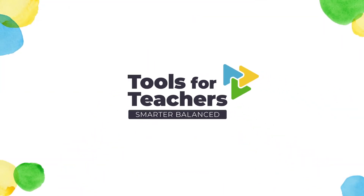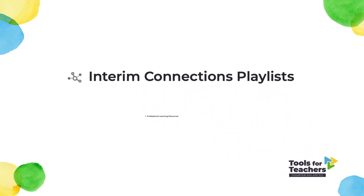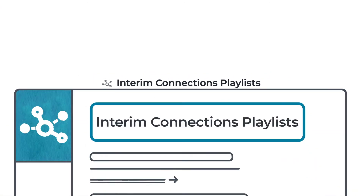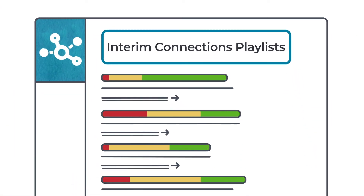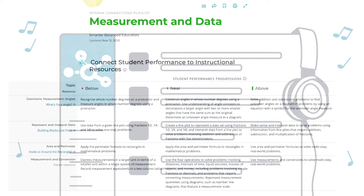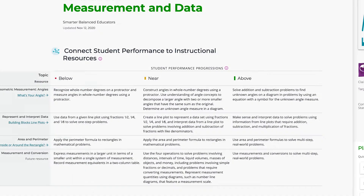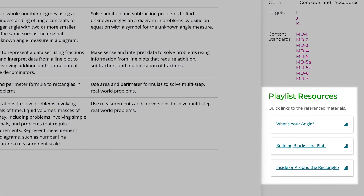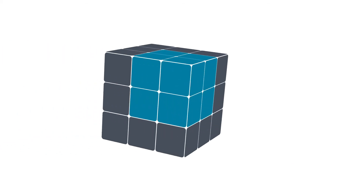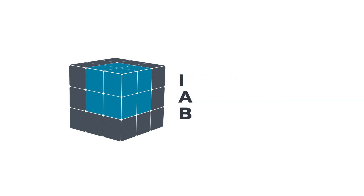In addition to instructional resources and strategies, Tools for Teachers includes interim connection playlists and professional learning resources. Interim connection playlists describe student performance progressions for a set of content and provide links to relevant instructional resources. Think of it like a music playlist, but instead of being organized by music genre, interim connection playlists are organized by grade-level content blocks of topics or themes, and they include links to relevant instructional resources. There is an interim connections playlist for each of the Smarter Balanced interim assessment blocks, also known as IABs.